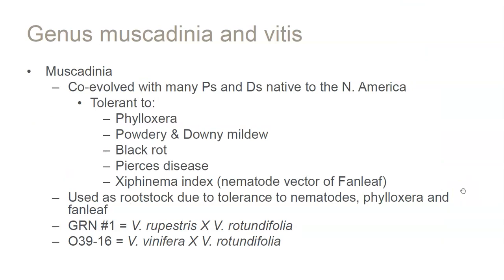Muscadinia co-evolved with a lot of pests and diseases that are native to North America, so anything that originated here is tolerant of those endemic pests and diseases that are an issue for Vitis vinifera. Muscadinia is tolerant of things like phylloxera — the root louse that gets on the root, makes a hole, that wound is then taken over by fungal pathogens in the soil, the vascular tissue is clogged, and the vine dies. Vinifera can die from this, but Muscadinia will not, as well as all other native North American grapes. Also, diseases like powdery mildew, downy mildew, and black rot can be withstood by Muscadinia pretty well.